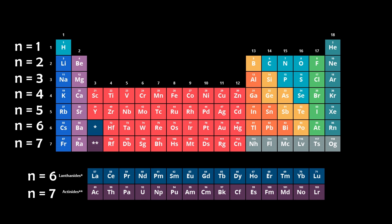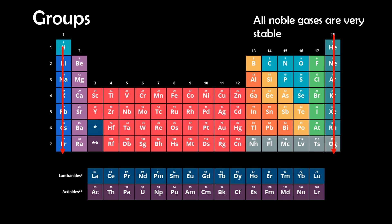Moving left to right across a period, electrons fill the atom's outermost shell or valence shell, one by one until it's complete. The columns or groups house elements with similar electron configurations, and therefore similar chemical properties.